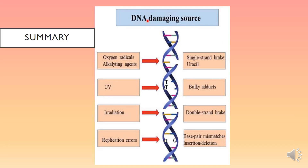As a quick summary, this is a double-stranded DNA diagram showing various agents that cause DNA damage. Oxygen radicals and reactive oxygen species and alkylating agents cause single-stranded breaks and may introduce uracil due to wrong base insertion. Ultraviolet rays cause thymine-thymine dimer formation, leading to bulky adducts. Radiation energy can cause double-stranded breaks, whereas replication errors can cause base pair mismatching — such as thymine pairing with guanine instead of adenine — or insertions and deletions.